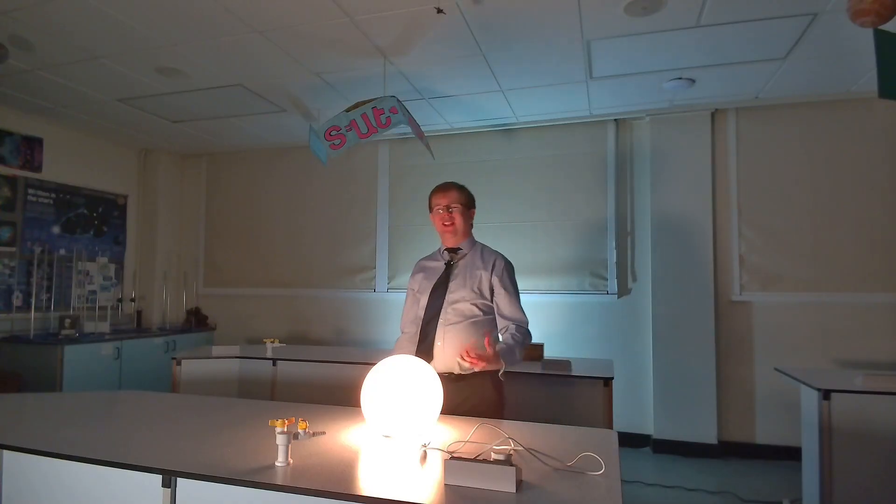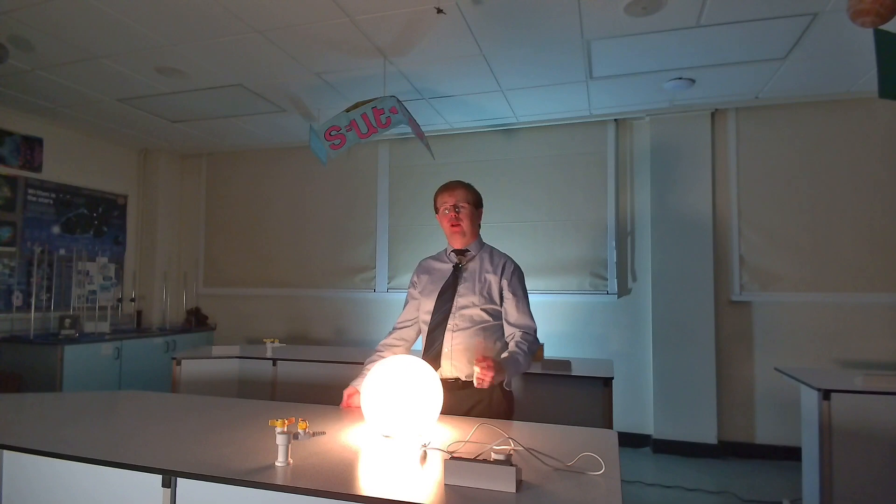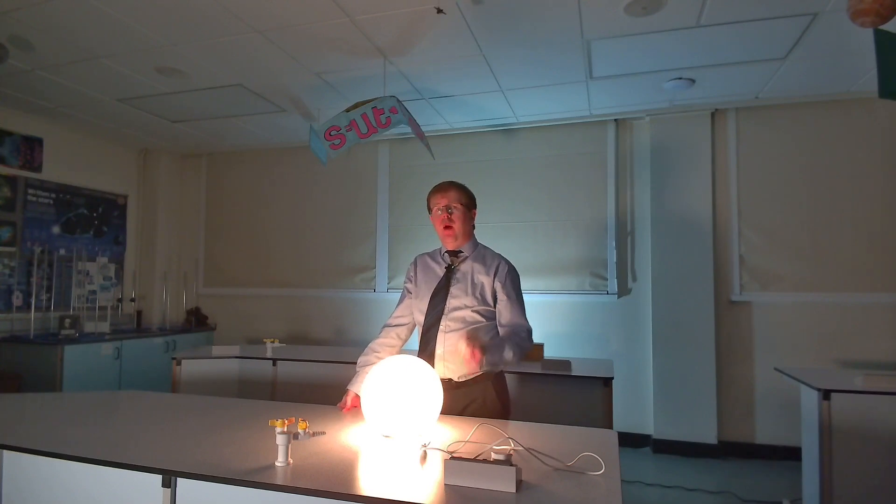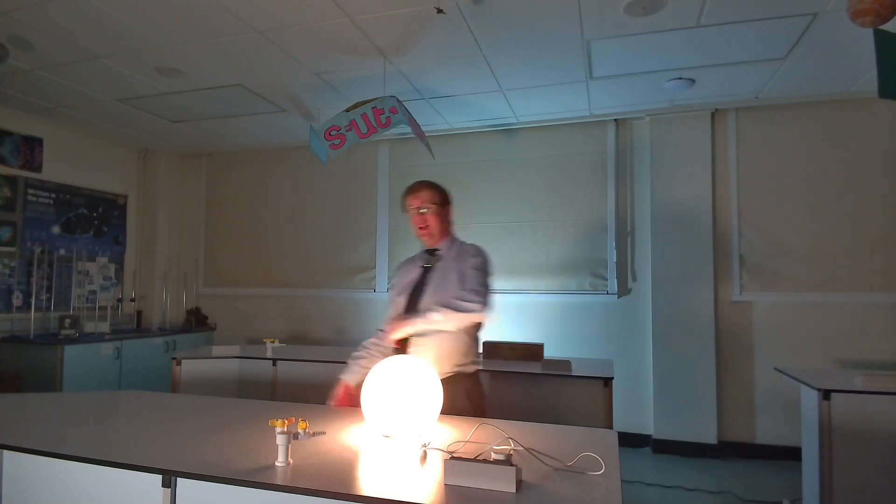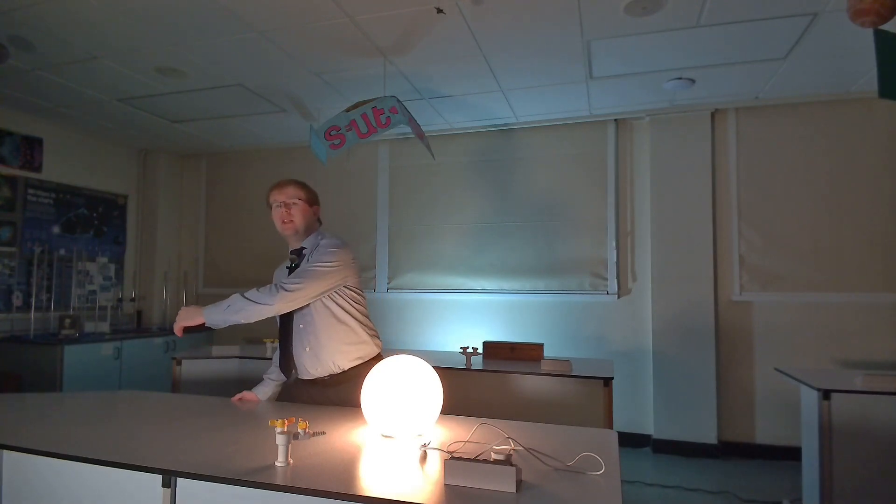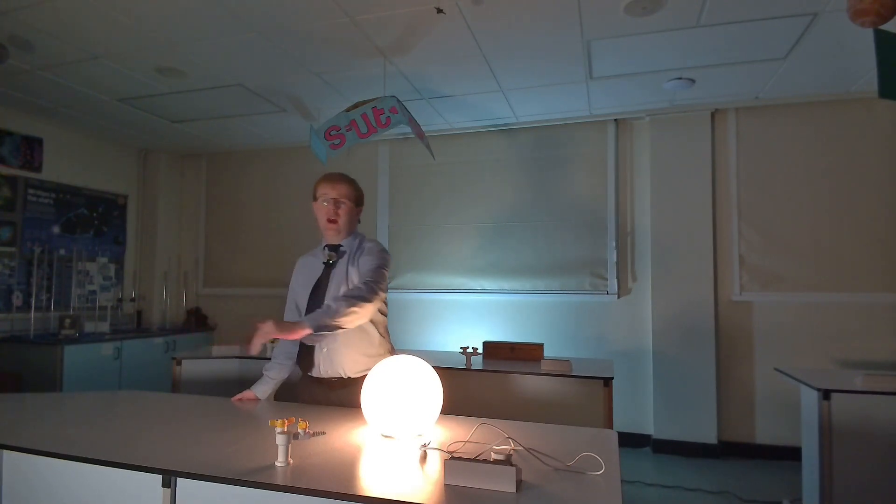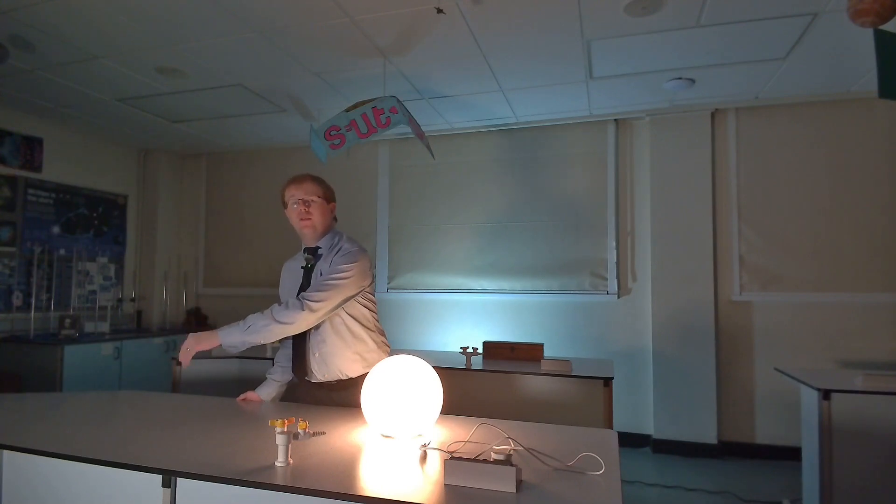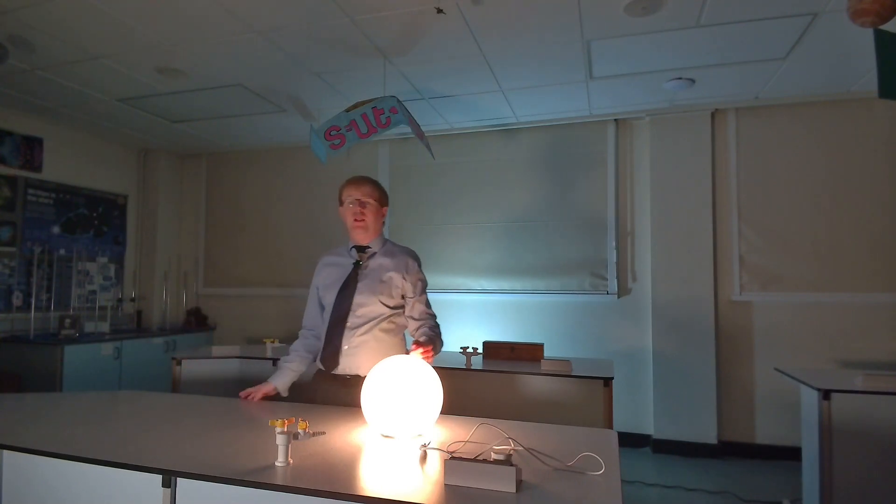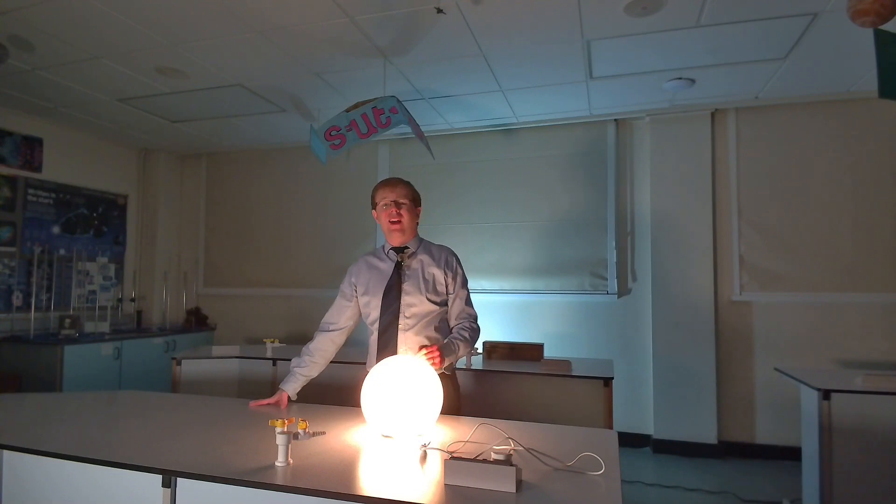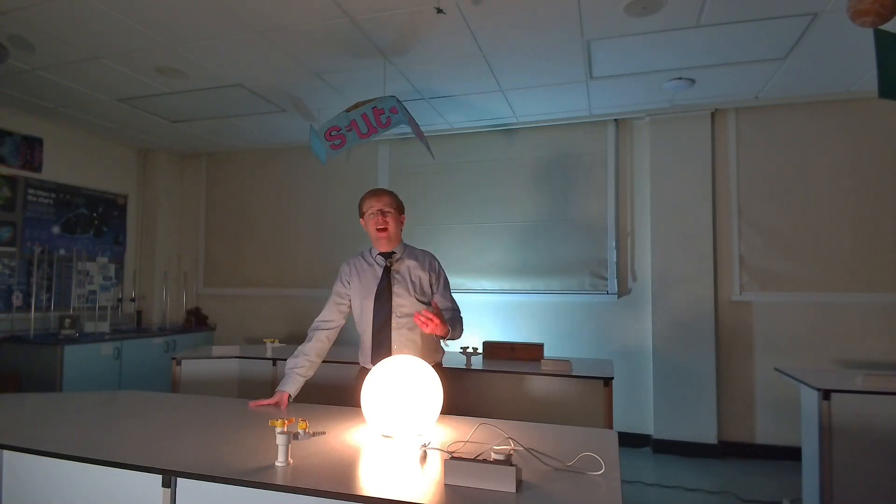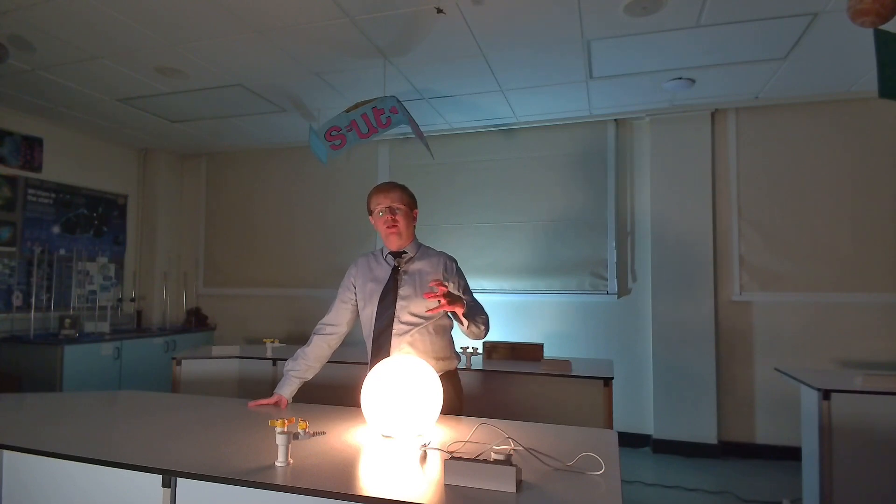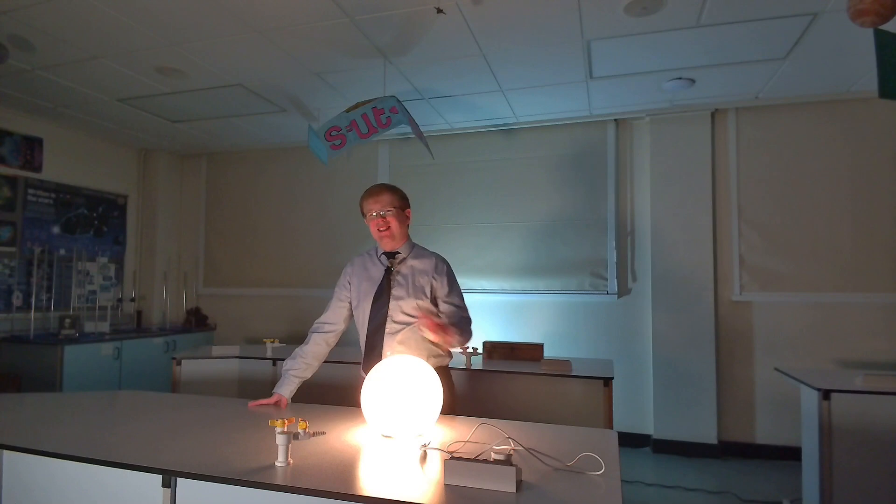We've not covered comets yet on this channel as a major focus, so here's a couple of key points about them. One, they have highly elliptical orbits. This means that at points in their cycle, they are much closer, or much further away from the sun, with hugely varying speeds and temperatures as a result. Two, they're composed of a mix of rock and ice. As they get closer towards the sun, the ice sublimes into a gas state, producing one of the comet's tails as it orbits.